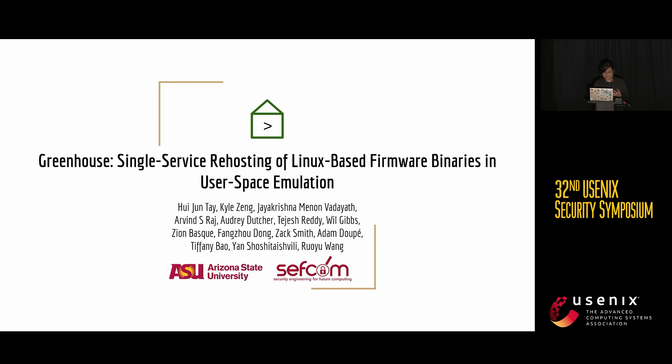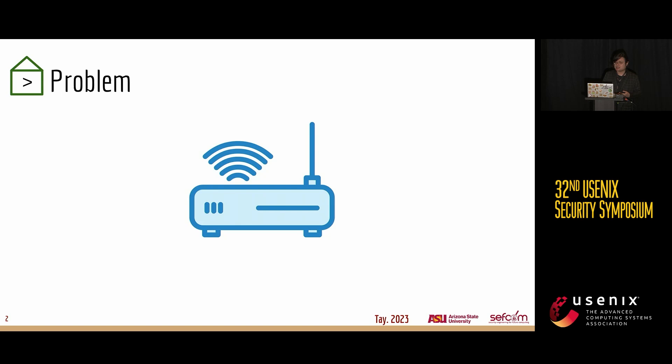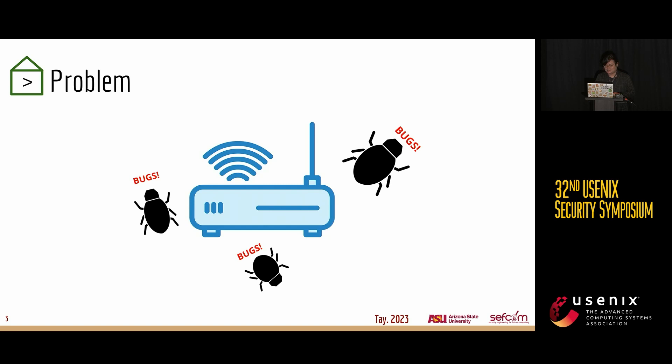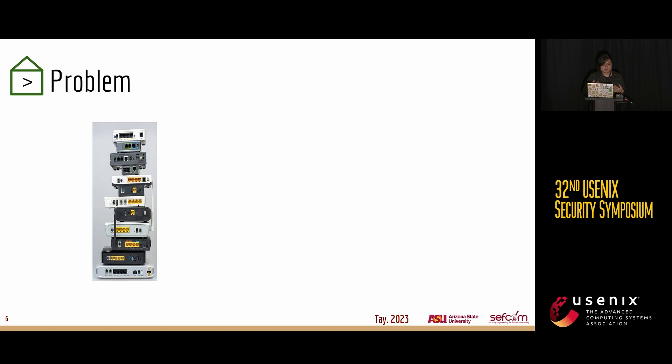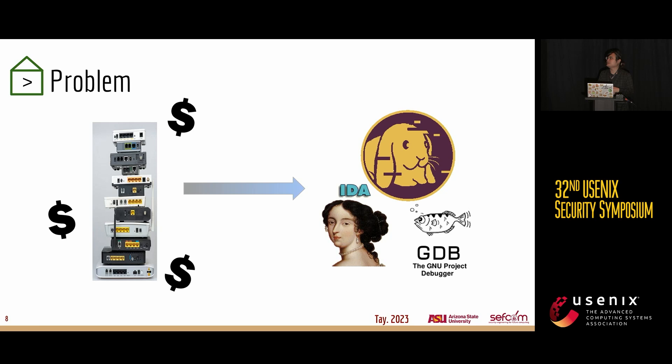The problem we're trying to address in our research is one of IoT devices — namely that IoT devices tend to come with bugs. There are a lot of IoT devices out there in the world, about 15 million IoT devices connected to the web as of 2023, and with the large number of IoT devices comes a large number of potential bugs. As security researchers, we want to be able to analyze and find bugs on these large-area devices without having to throw huge amounts of money at buying each and every variation and model of a given device. We also want to apply well-established static and dynamic analysis tools to these devices to find bugs in a scalable manner.